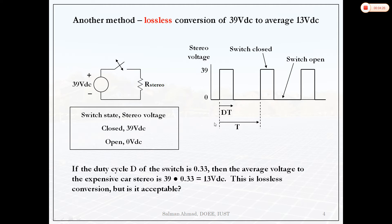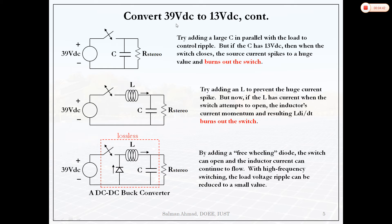The main issue is we are having a fluctuating DC output voltage, which may not be acceptable. We require additional components — we cannot convert DC voltage simply with a switch. Output voltage ripple can be reduced by connecting a capacitor in parallel with the load. But with a large voltage difference like 39 V to 13 V, there will be huge current transients in the switch that could damage it. So we connect an inductor in series with the switch.